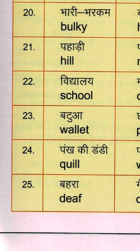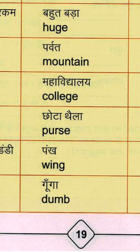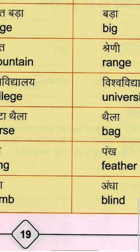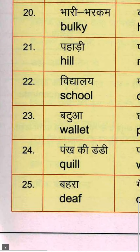Twenty-fourth group: Pankh ki dandi means Quill — Q-U-I-L-L. Pankh, meaning the wing itself, is Wing — W-I-N-G. And Pankh also refers to Feather — F-E-A-T-H-E-R.